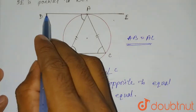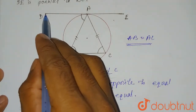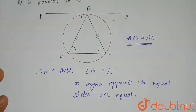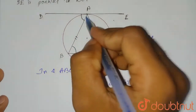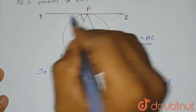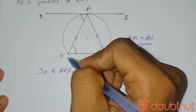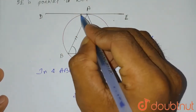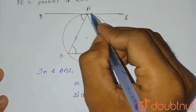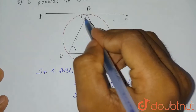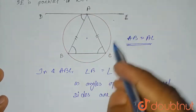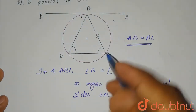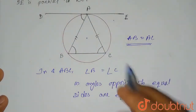Again, we can say that angle DAB equals angle ACB. How? Because it is the angle between the chord AB and the tangent DAE. The angle subtended between the chord and the tangent equals the angle subtended by the chord in the alternate segment of the circle.